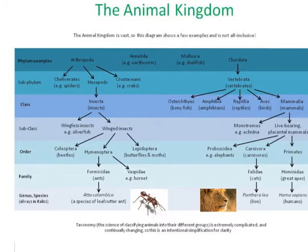If we just look at one kingdom — the animal kingdom, because that's probably the one all of us are most familiar with — we can look at the way it's broken down into groups. These are just a few examples, not at all all-inclusive. Looking at some phyla within the animal kingdom, we have Arthropoda, or arthropods; Annelids, which would be all of the worms; mollusks, which would be shellfish; and chordates, which get divided into vertebrates as a subphylum.